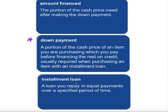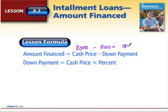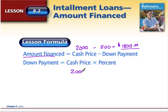The installment loan itself is the loan you repay in equal payments over a specified period of time. So how do we calculate that down payment? The down payment comes off of the total cash price. For example, if you're buying a new furnace that costs $2,000 and you want to put $200 down, the amount you're going to finance is $2,000 minus $200, meaning you need to borrow $1,800 — that's the amount financed. You can also calculate the down payment by percentage: $200 on a $2,000 loan means you put 10% down, since $2,000 times 10% equals $200.